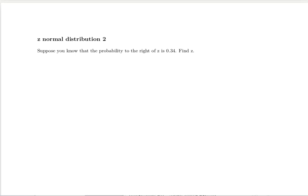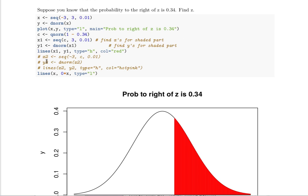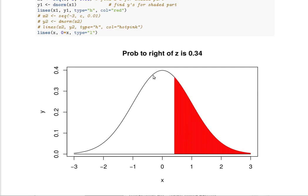Okay, let's draw a picture. The handout for the video will include the R code that draws the picture. This shows a standard normal distribution and this red part is 34% of the total area under the curve.